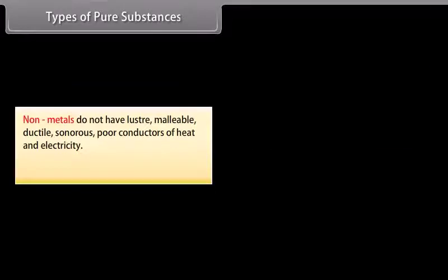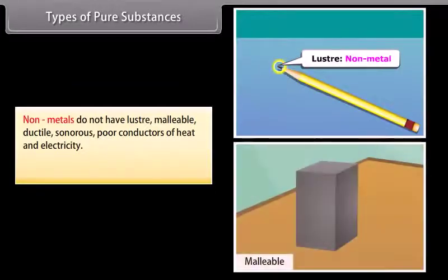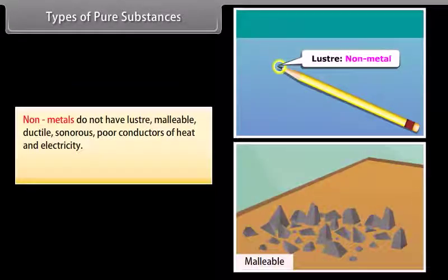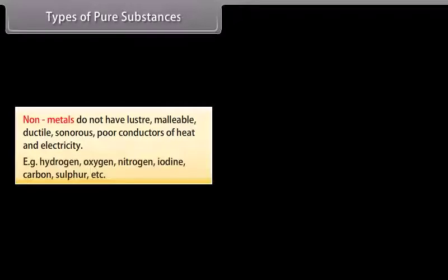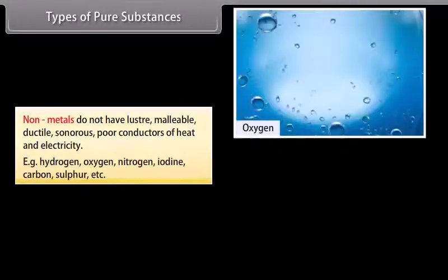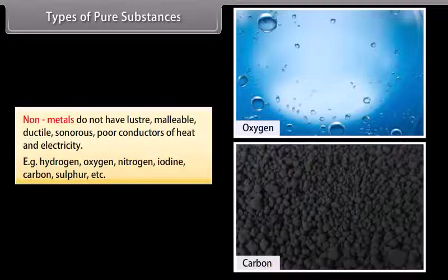Non-metals do not have luster, malleability, ductility, or sonorousness, and are poor conductors of heat and electricity. For example: hydrogen, oxygen, nitrogen, iodine, carbon, sulfur, etc.